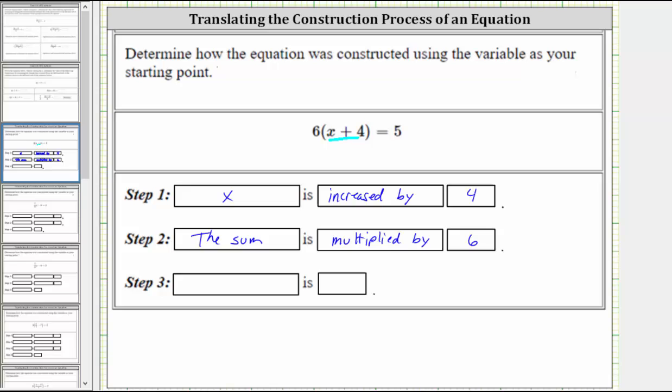After multiplying by 6, notice we have the entire left side of the equation, and therefore the product from step two, or the result, is 5. So we say the result, or product from step two, is 5.